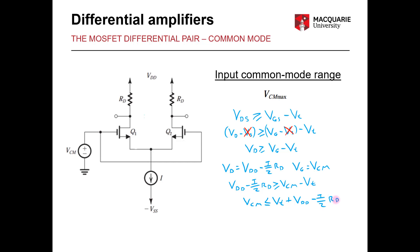So it's clear to see that if our common mode voltage must be less than or equal to that then of course the maximum will be in the case when it is equal to VT plus VDD minus I over 2 RD. So we found the maximum limit of our common mode range.